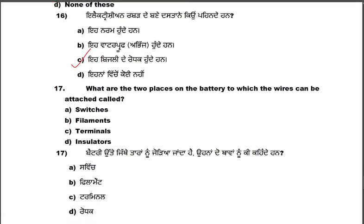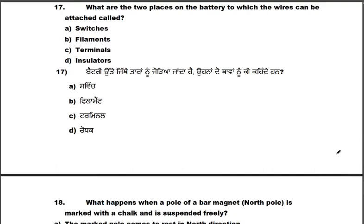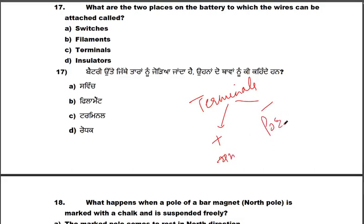What are the two places on the battery to which the wires can be attached? The answer is terminals — positive and negative terminals. The answer is option C, that is terminals.